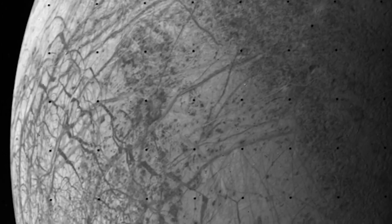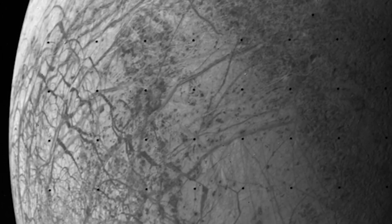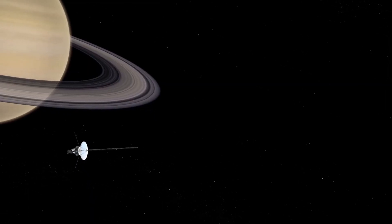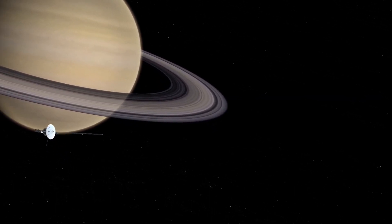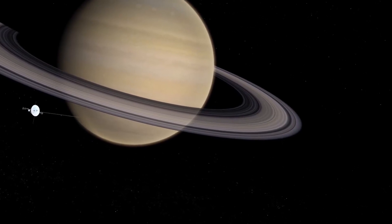It was on Io when the first volcanic activity was seen outside of Earth. Observations have shown that Saturn's rings are intricately twisted and intertwined, with several ringlets clinging to them.